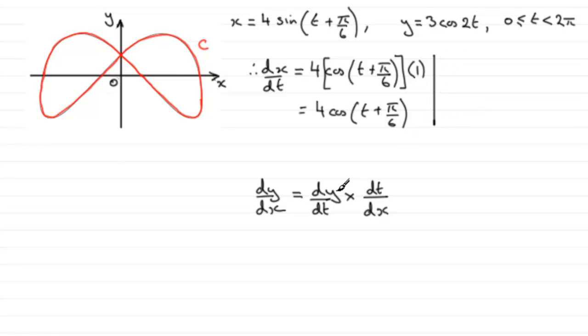Now I've also got to find dy by dt. So we've got y equals cos 3t. So when it comes to working out what dy by dt is going to be, same thing, chain rule as we did here.